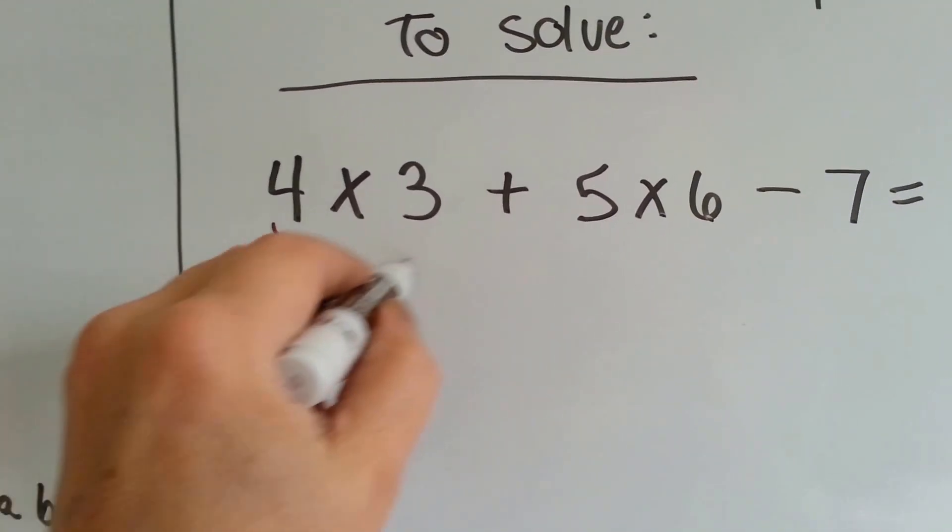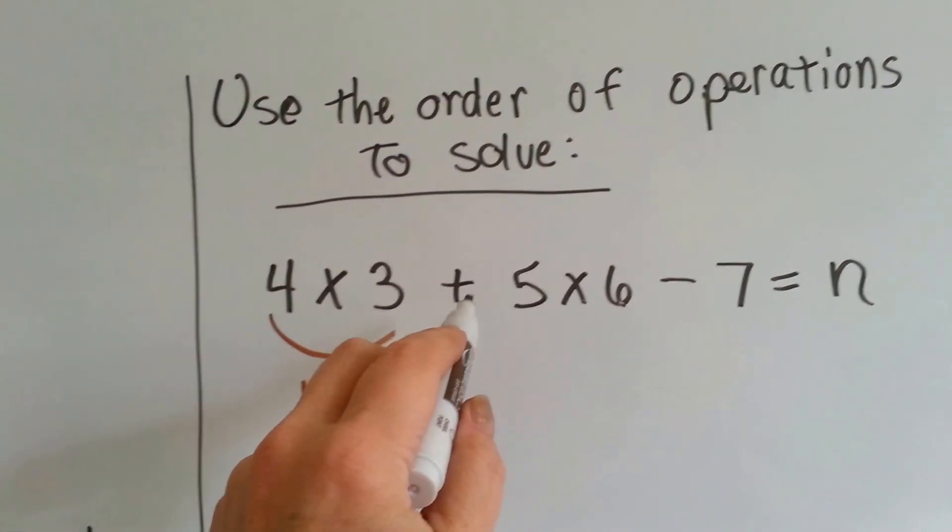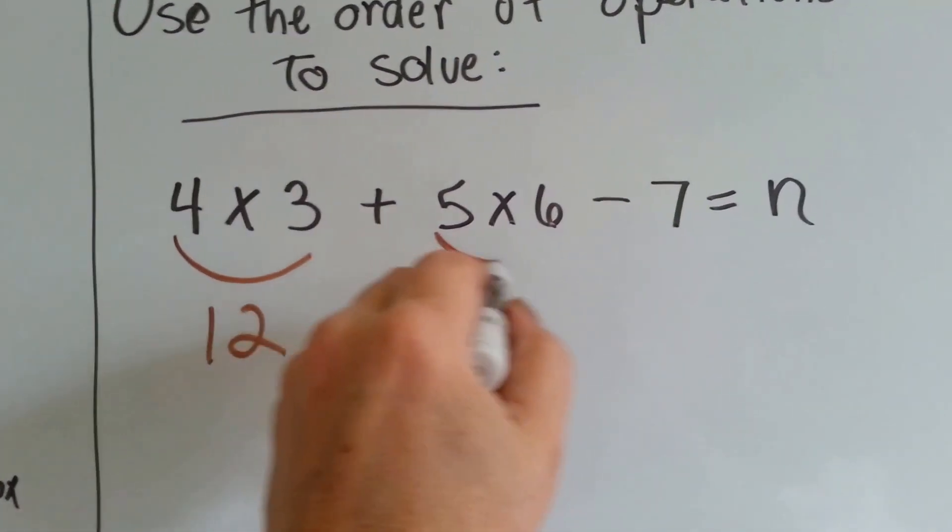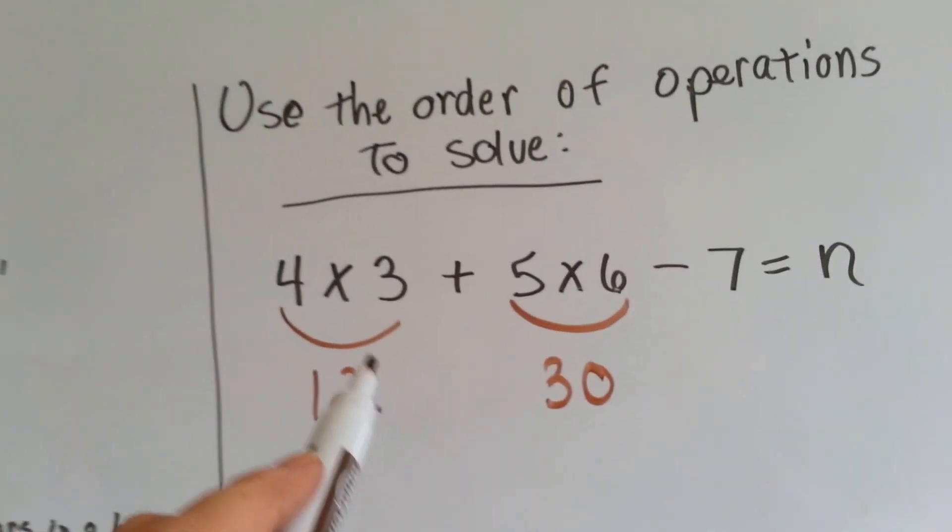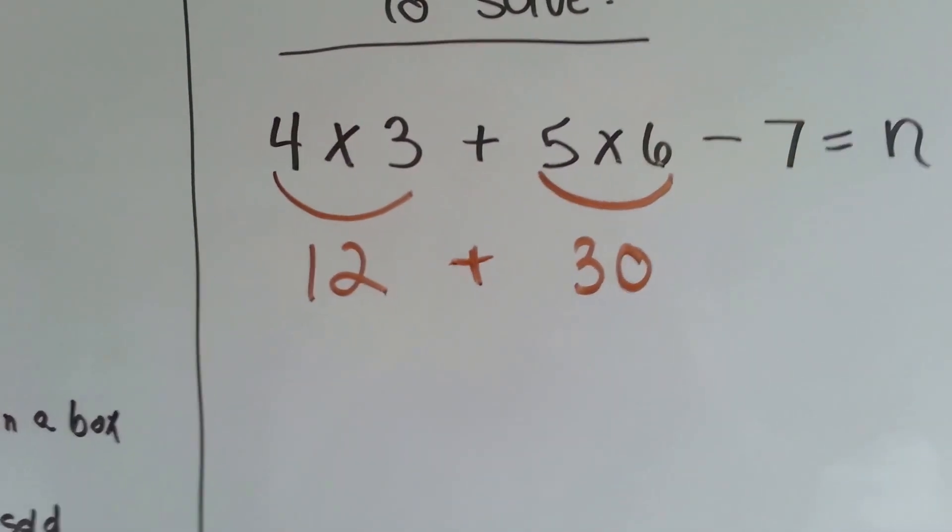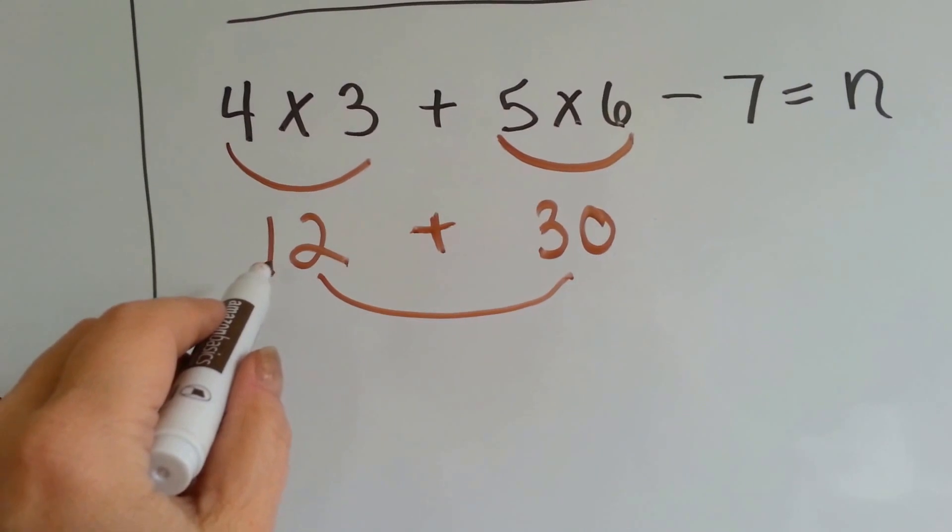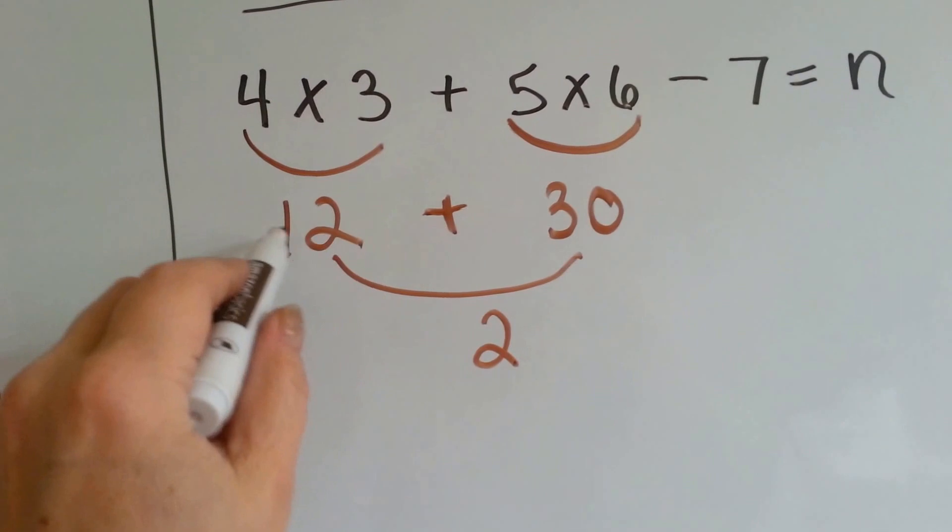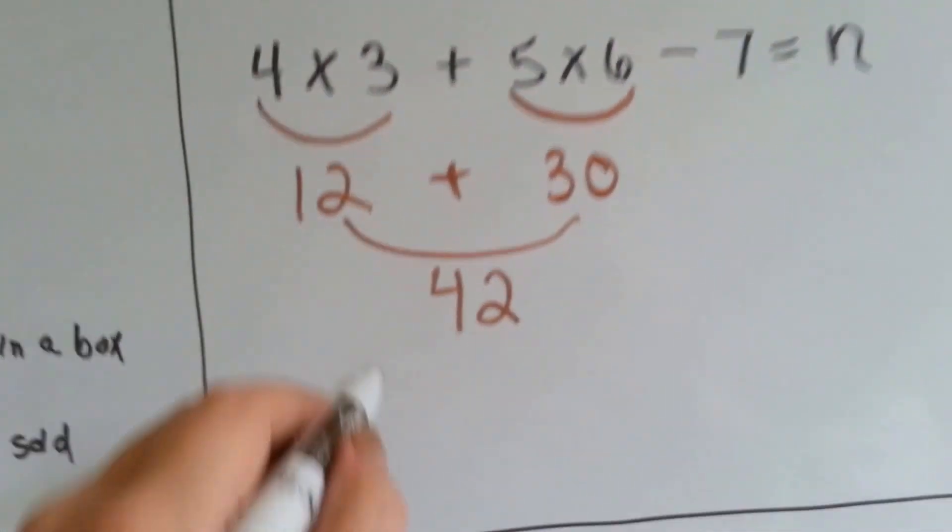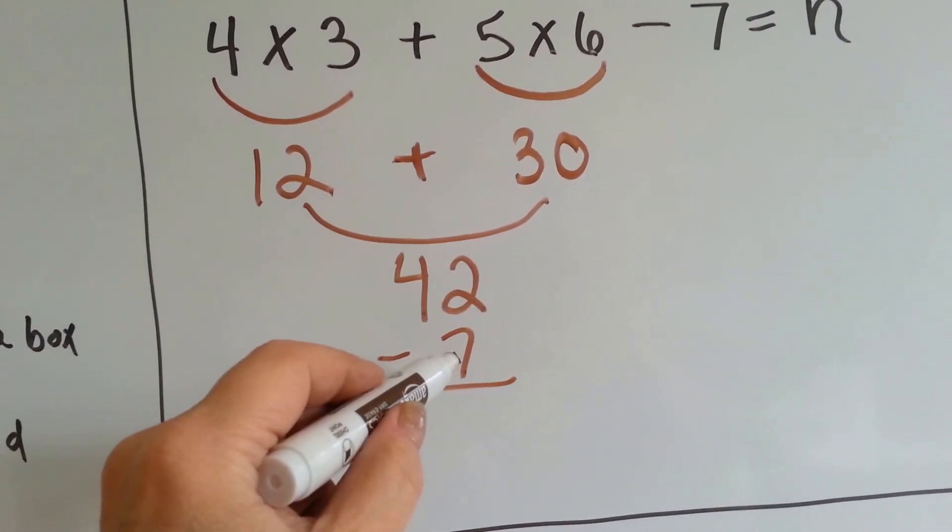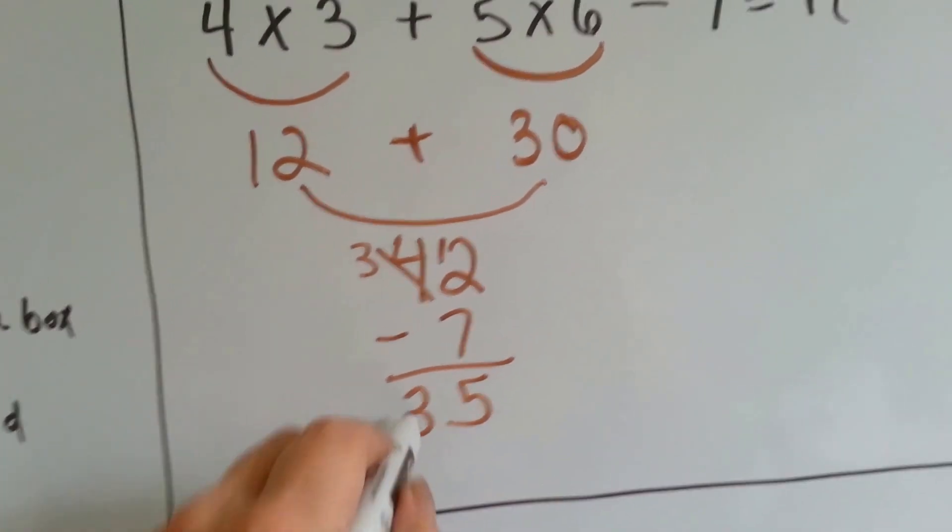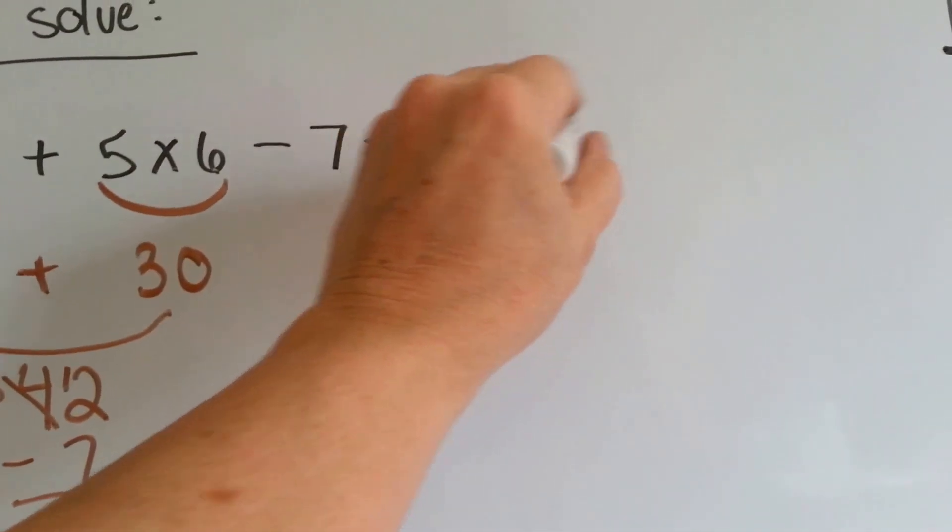4 times 3. What's 4 times 3? 12. Now there's an addition sign, but there's another multiplication sign. But we're supposed to multiply before we do any adding. So now we need to multiply this. 5 times 6 is 30. Now there's a subtraction sign. But it says you've got to add before you can subtract. So we must have to add the 12 plus the 30 together. What's 12 and 30? 12 plus 30 is 42. Now can we subtract? Yes, that's the last thing we can do. So we're going to subtract 7 from this. Can you have 2 and take 7 away? Nope. So we've got to borrow from the 4. It becomes a 3 and the 2 becomes a 12. 12 take away 7 is 5 and we drop down the 3. So that means n is equal to 35.